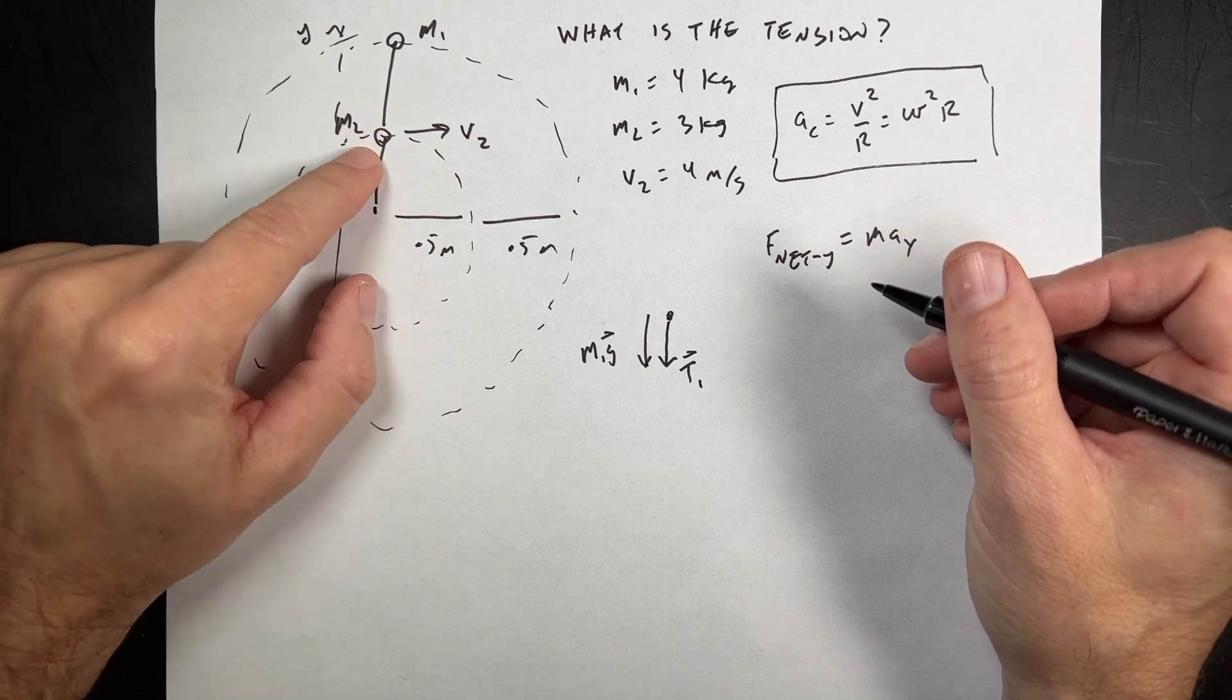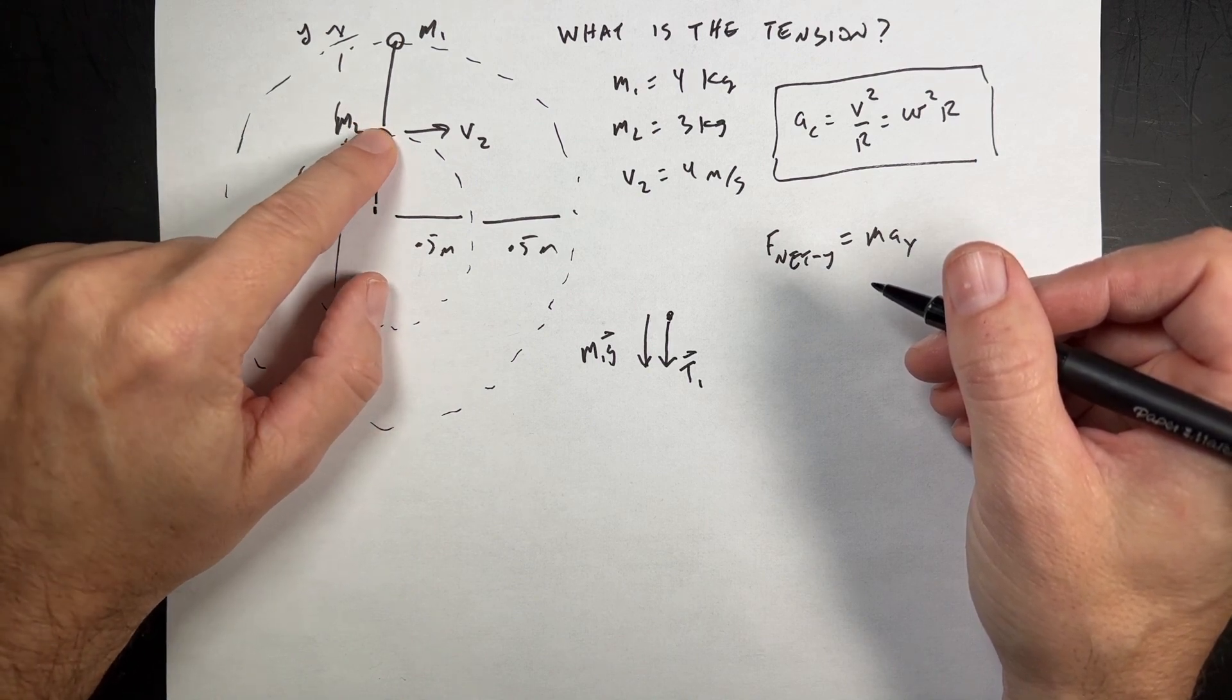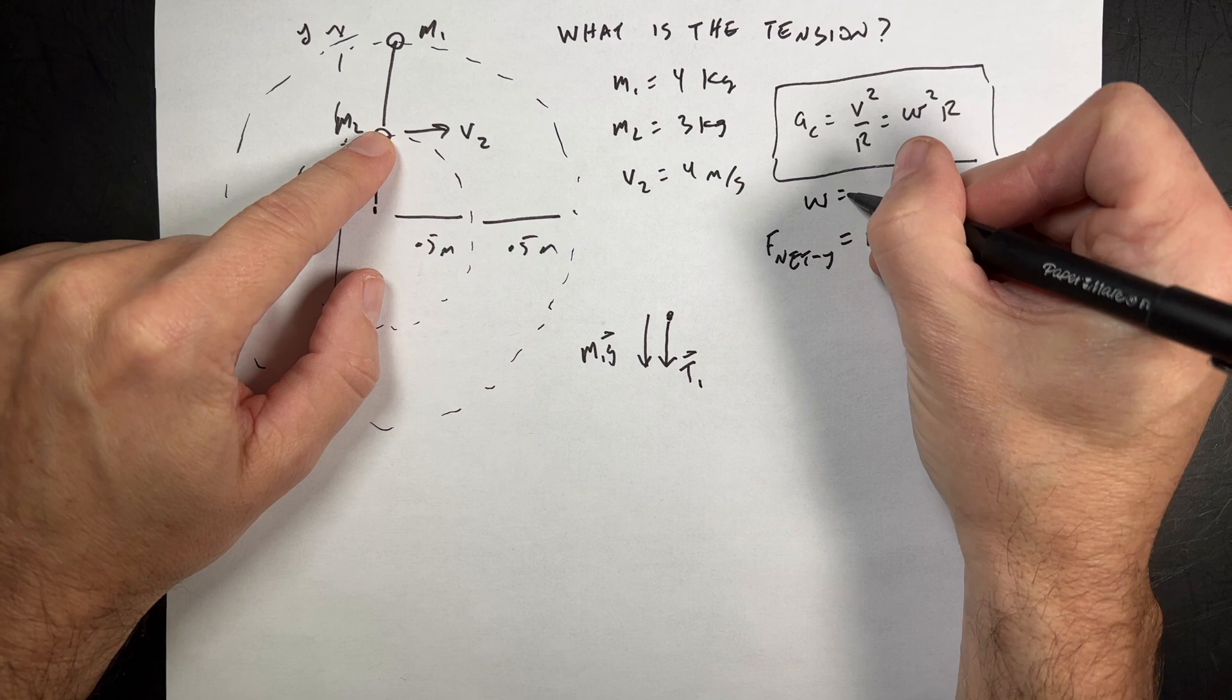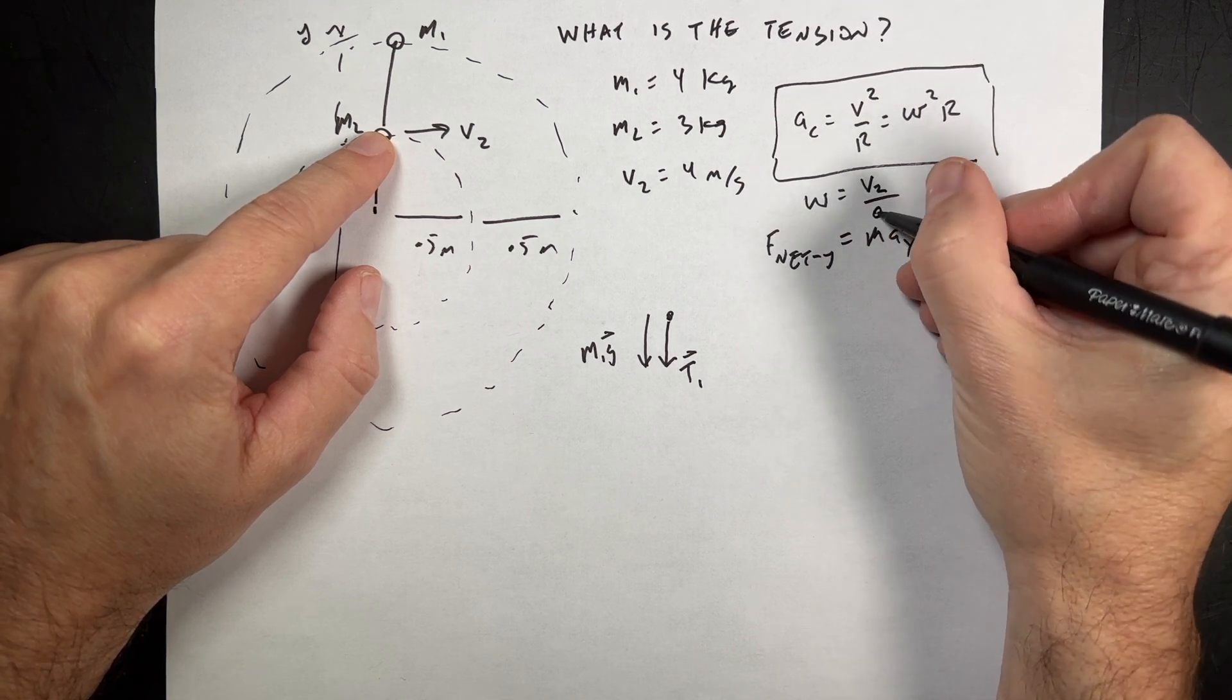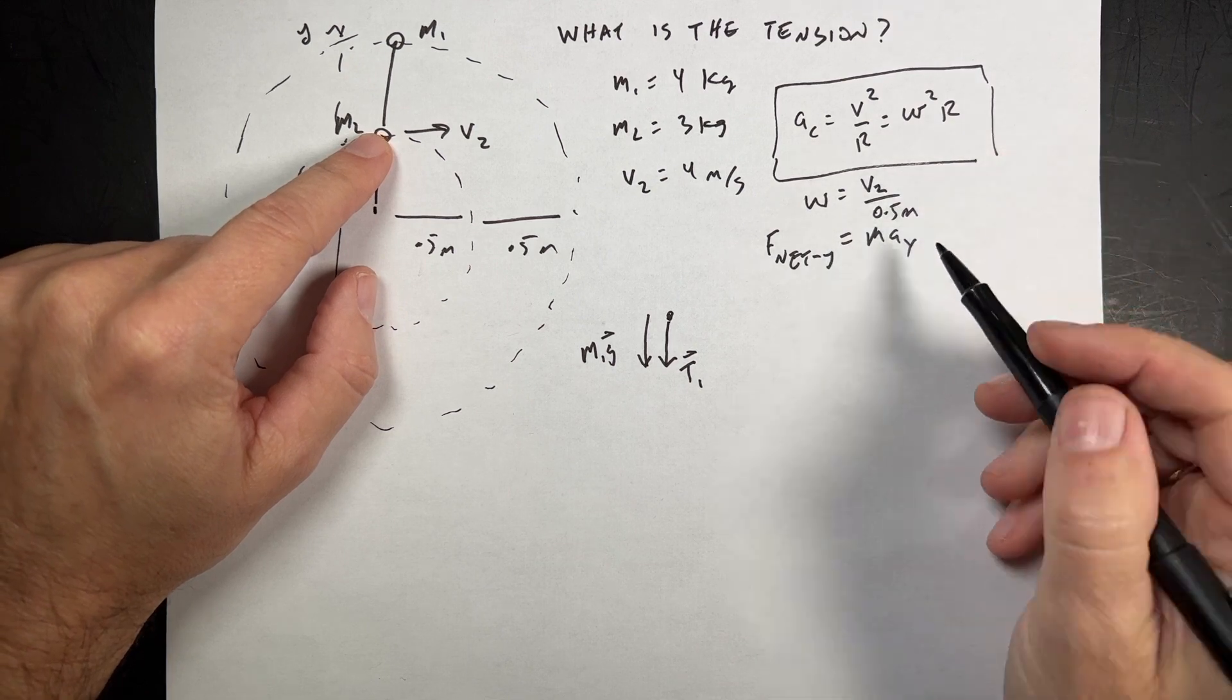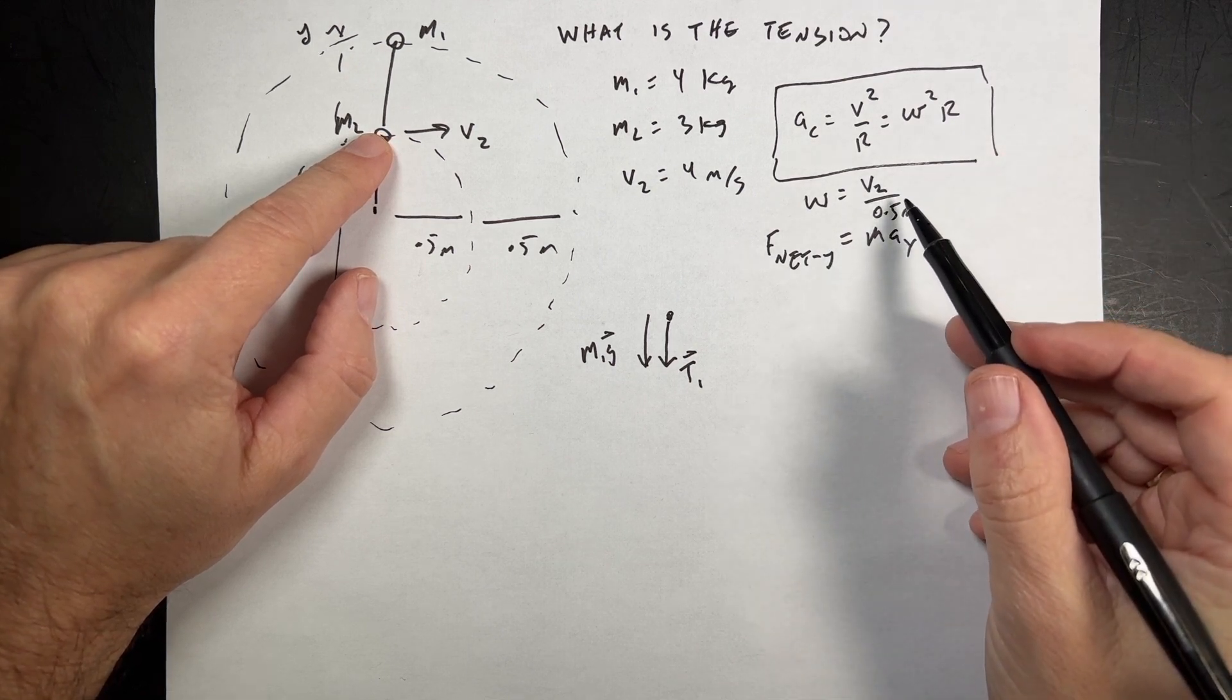If it's moving in a circle, this one's moving in a circle of radius 0.5 meters with a velocity v2. So omega is going to be v2 over 0.5 meters. And that would give me my angular velocity in radians per second.